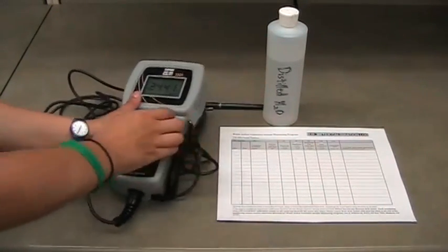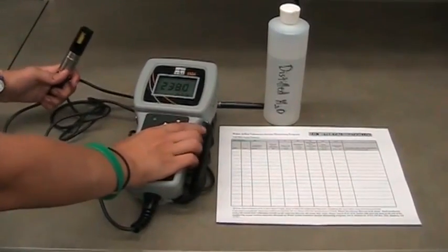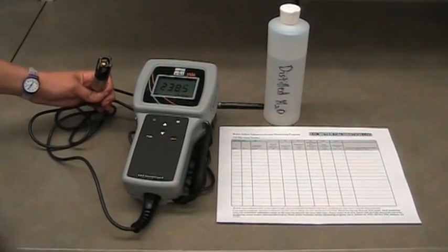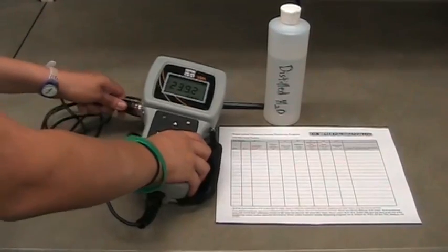Check the membrane, the gold part of the sensor, for tears, holes, or air bubbles. If damage exists, see the video on how to replace the membrane sensor tip. Shake excess water off the sensor and replace the probe in its chamber.